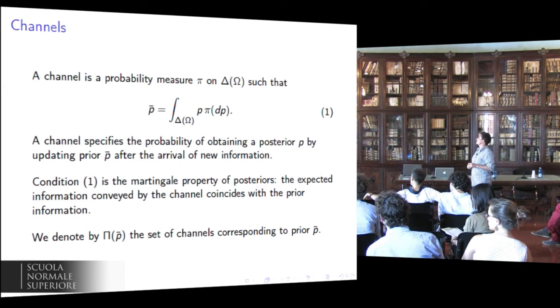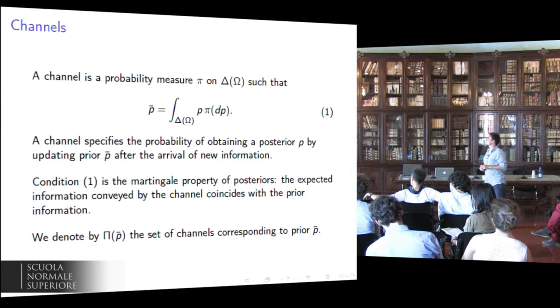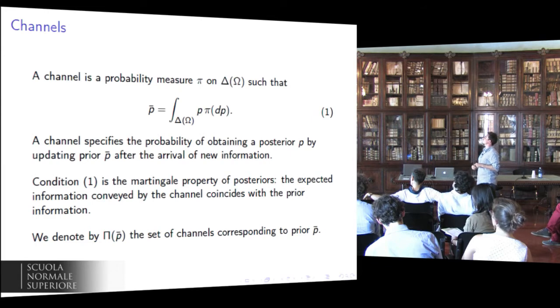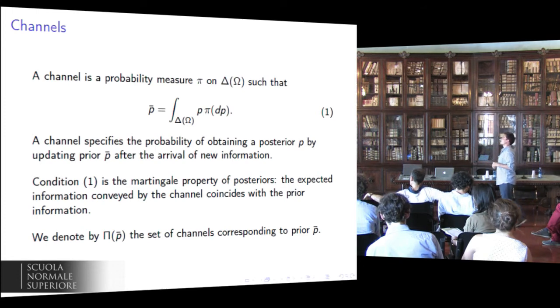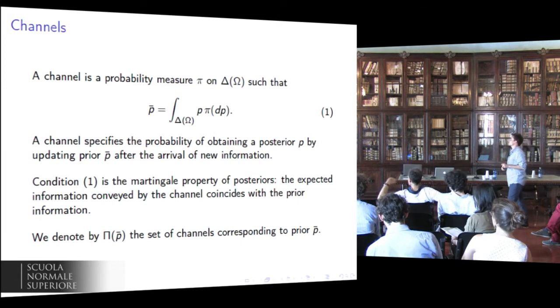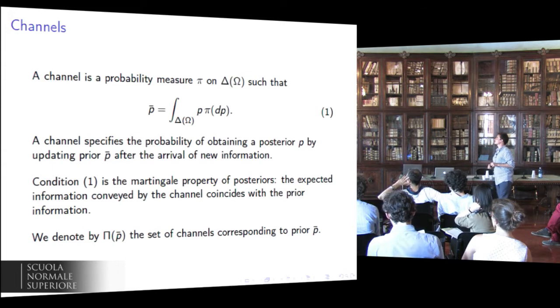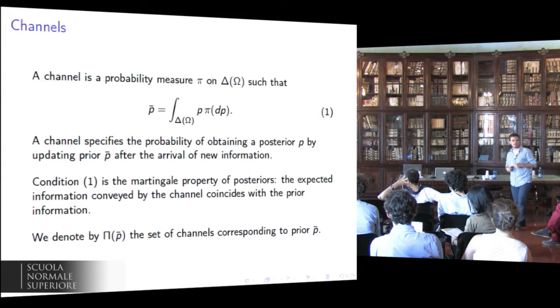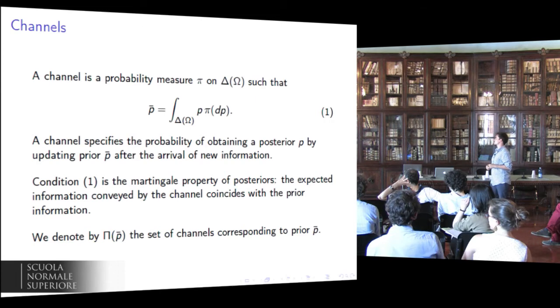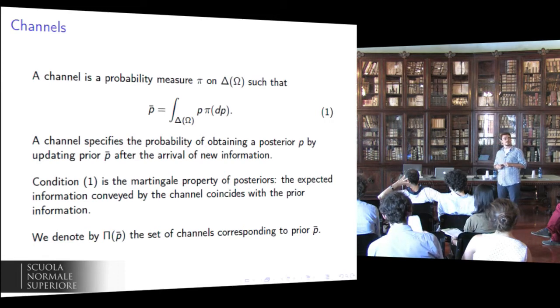In other words, a channel specifies the probability of obtaining a posterior p by updating prior p-bar after the arrival of new information. Condition one is the so-called martingale property of posteriors, and it says that the expected information conveyed by the channel coincides with the prior information. The term channel comes from information theory. In statistics and in economics, the same object is called experiment, basically.